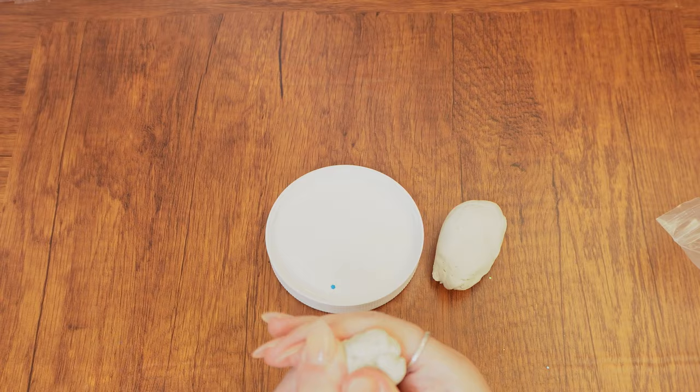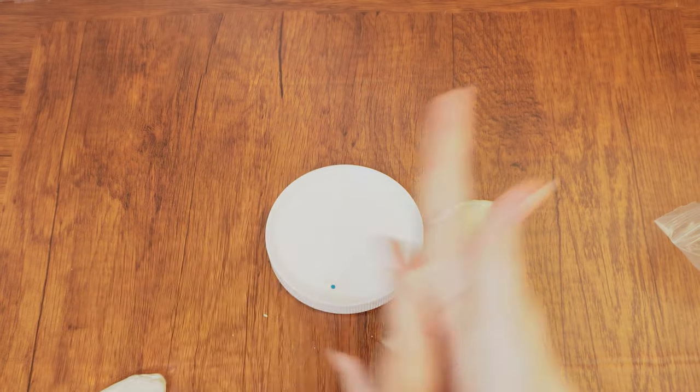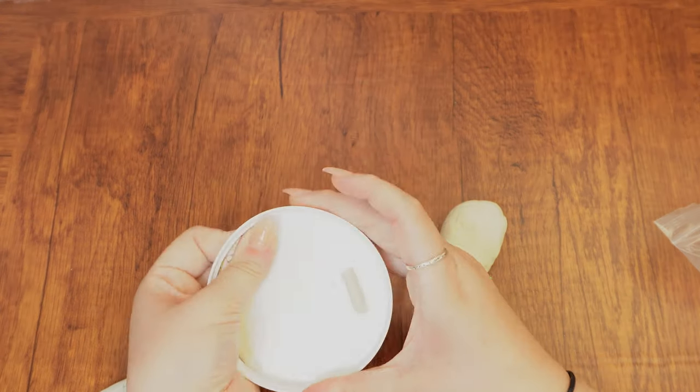Open the jar and layer the inside of the lid with air dry clay. Create dips and hills for a dynamic rather than flat look.